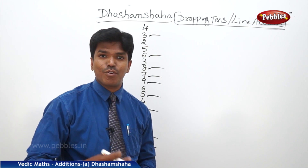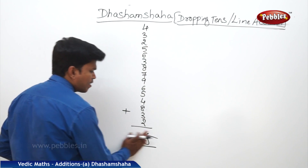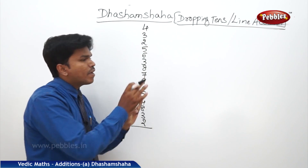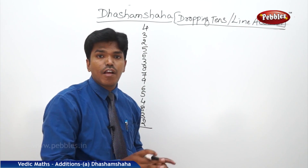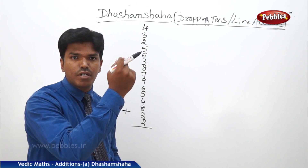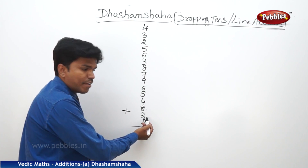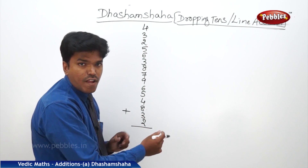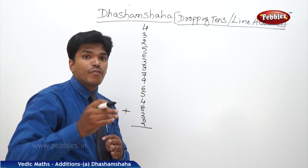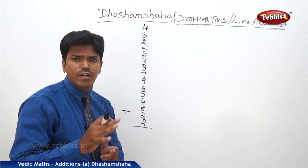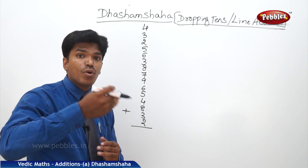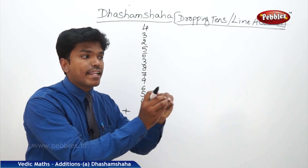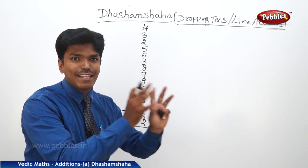How is it possible? See here. Generally, we start counting from top to bottom, but here we are going to start from bottom to top. What is 2 plus 3? 5. What is 5 plus 8? 13. Whenever you are getting a sum of 10 or more than 10 when adding, you need to drop a 10 there.